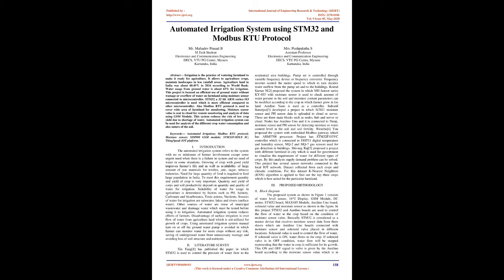Literature Survey: XIN Feng [1] published a paper in which STM32 is used to control the pressure of water flow to residential area buildings. The pump set is controlled through a variable frequency device. A frequency inverter controls the motor speed, which in turn decides water outflow from the pump set to the buildings. Komal Kumar N [2] proposed a system in which the MH sensor series KY033 with moisture sensor is used to check the amount of water present in soil. Moisture content parameters can be modified according to the crop, and Arduino Nano is used as the controller.